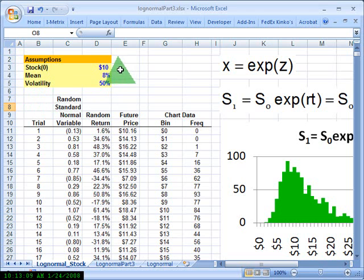I only need three assumptions here. I start with a stock price of $10, then a mean return, the expected return on the stock of 8%. That's the periodic rate of return, and I'm going to do one period to keep it simple.